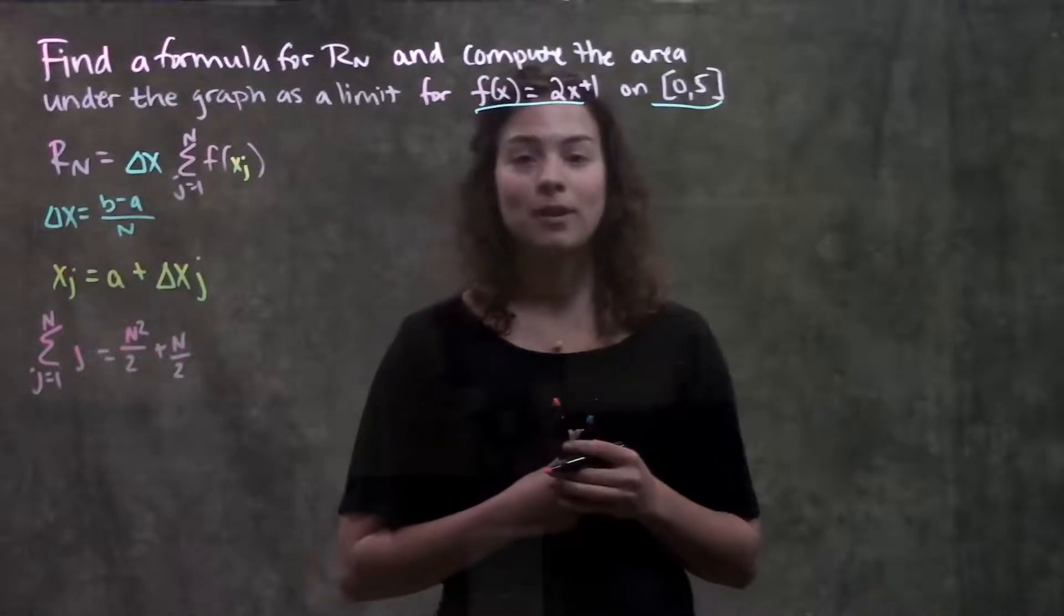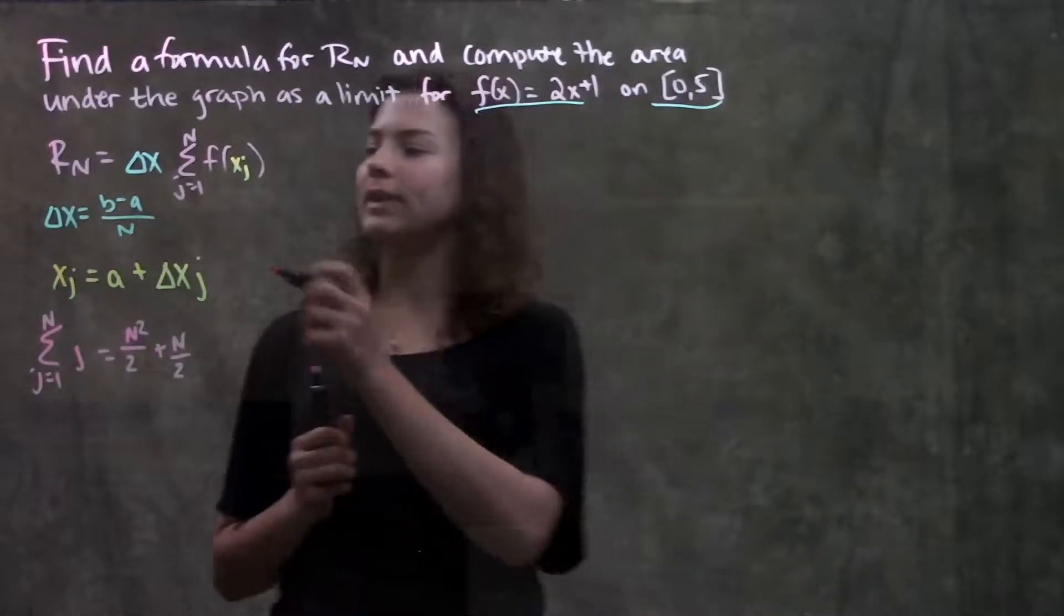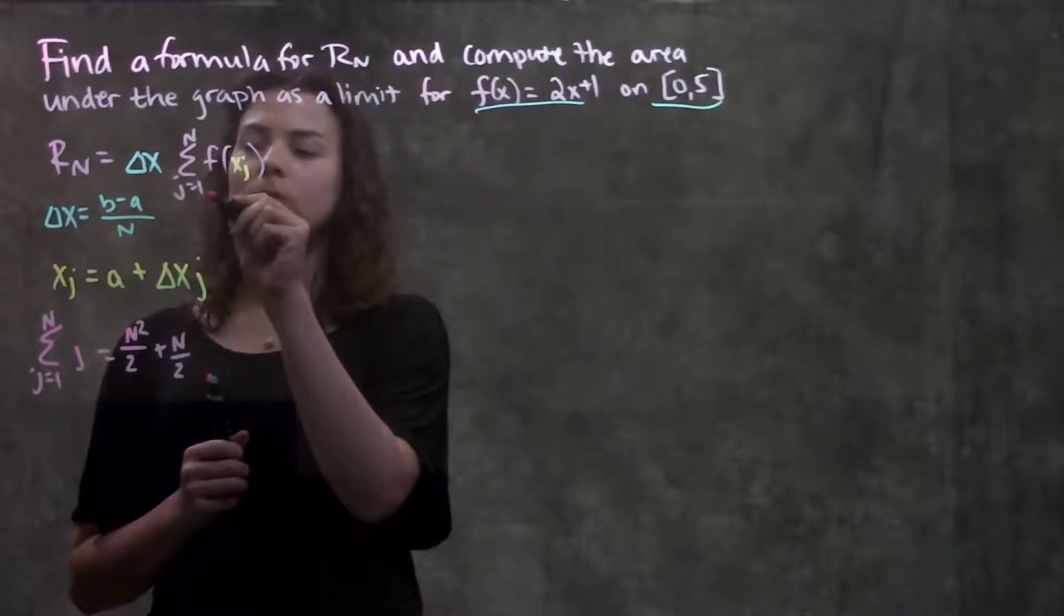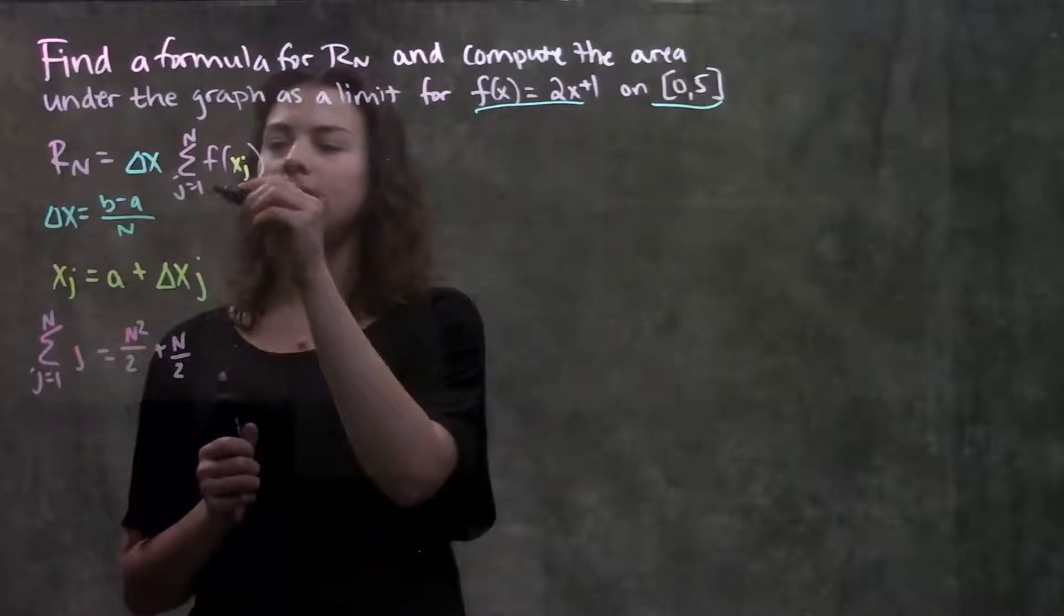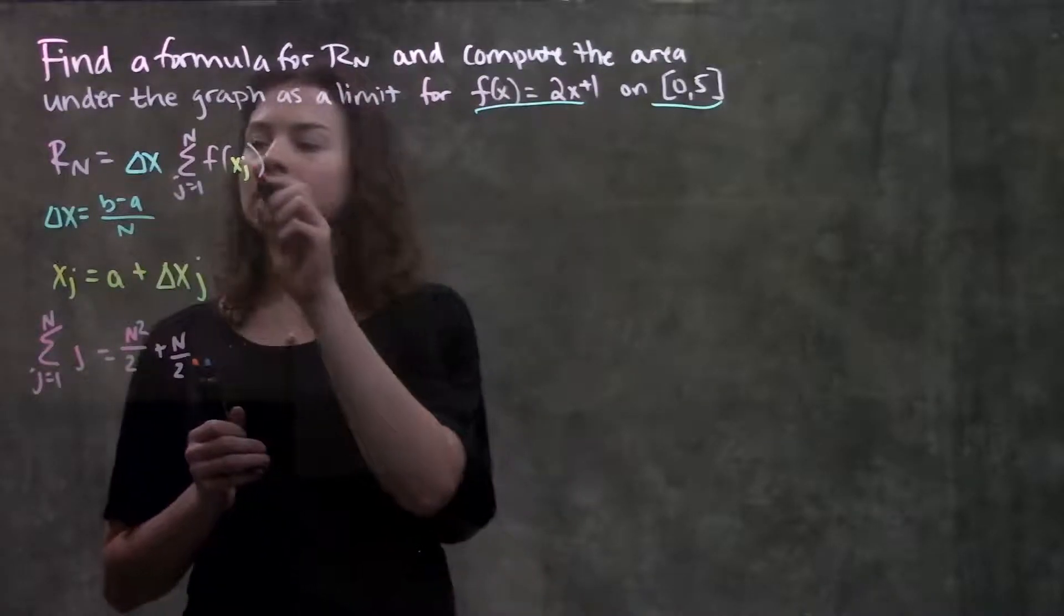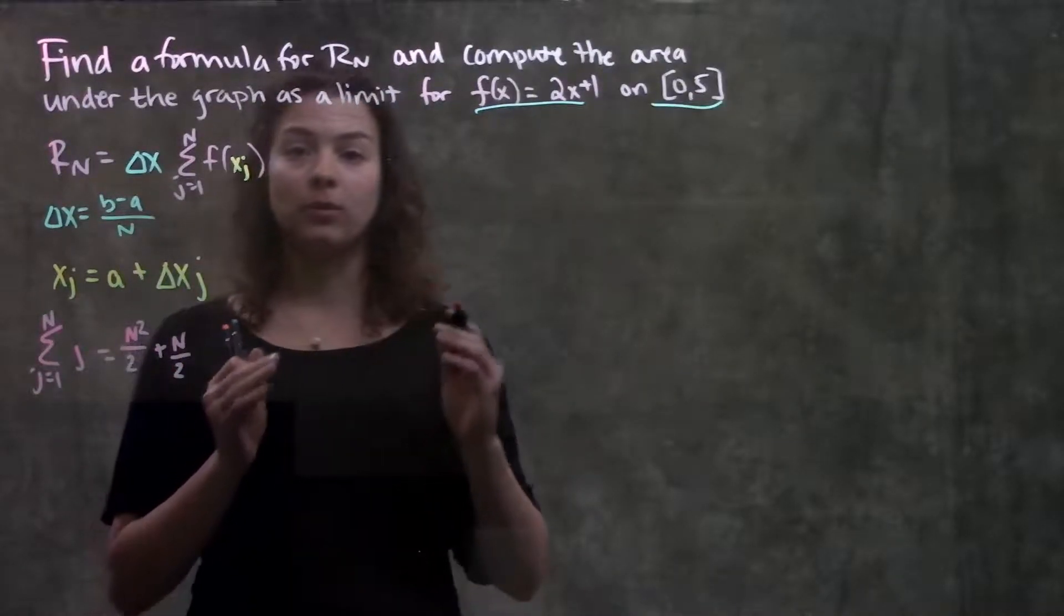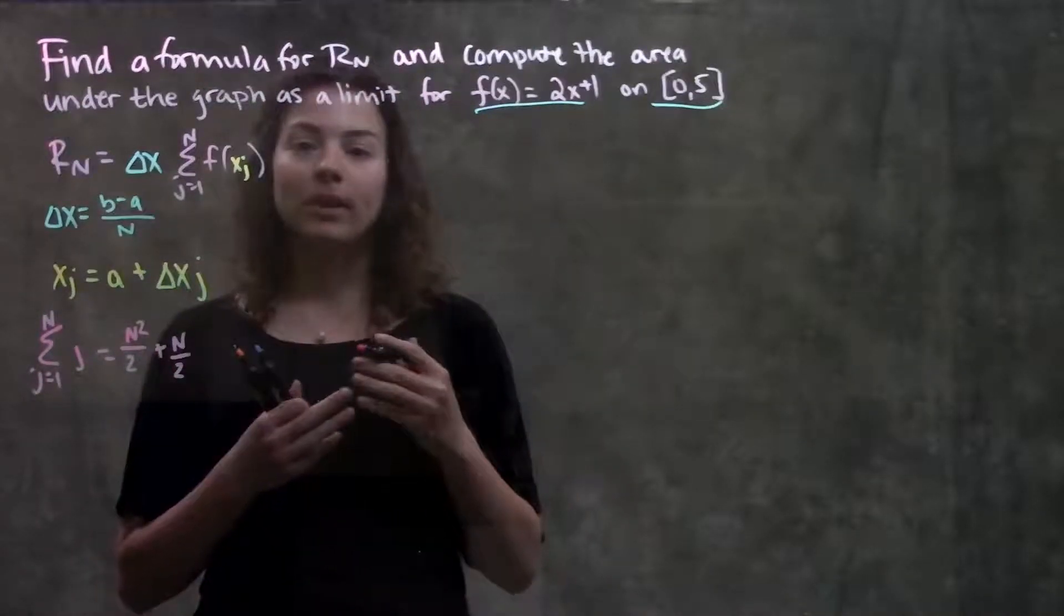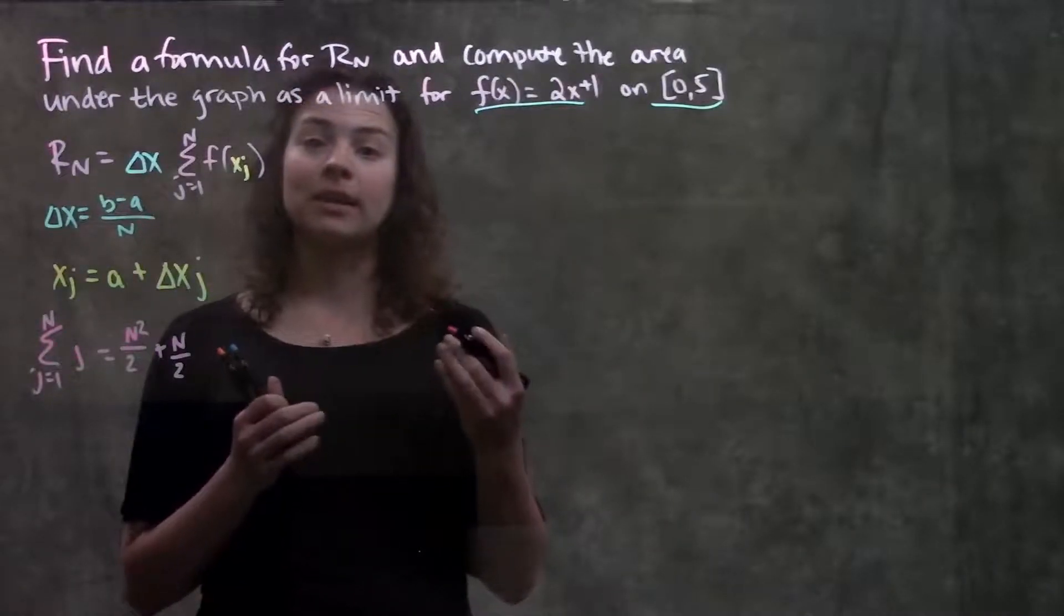If you remember in this section, they gave us a formula to calculate Rn, and they told us that the summation from j equals 1 to n, some number n, of f of x_j, or just the height of each rectangle, times our delta x, or times the width of each rectangle, will give us an approximation of the area underneath the graph.